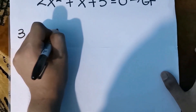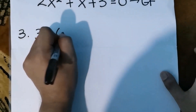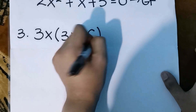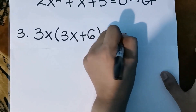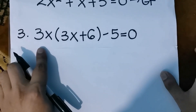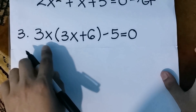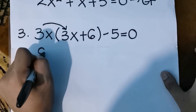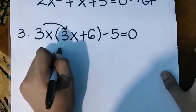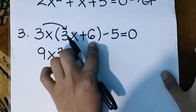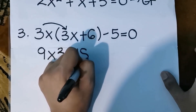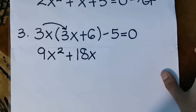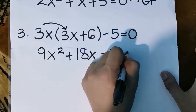For our third example, we have 3x times the quantity of 3x plus 6, minus 5 equals to 0. We apply the distributive property by multiplying 3x by the binomial 3x plus 6. So 3x times 3x: 3 times 3 is 9, and x times x is x squared, giving 9x squared. Then 3x times 6: 3 times 6 is 18, so we have positive 18x. Minus 5 equals to 0.